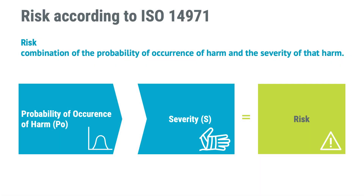So what is risk? Turning to the risk management standard again, it is the combination of probability of occurrence of harm and the severity of the harm. So when we strive to create a user interface with no unacceptable risk, we try to bring down the probability of occurrence of harm, or the severity of harm, or both, so that the magnitude of the risk is as low as possible.